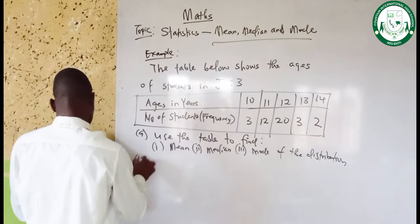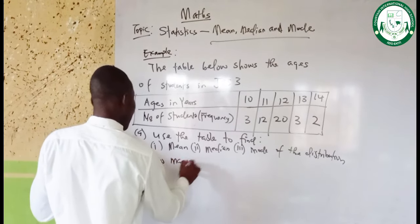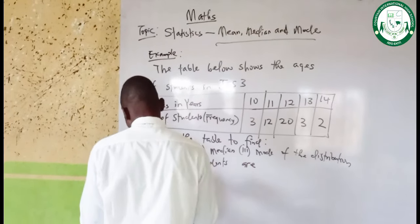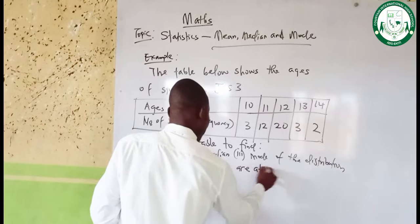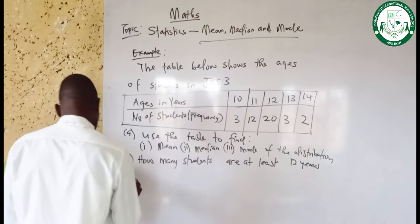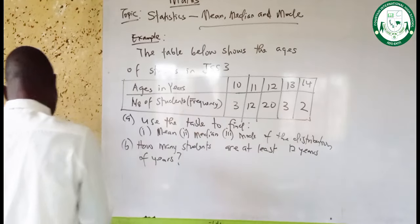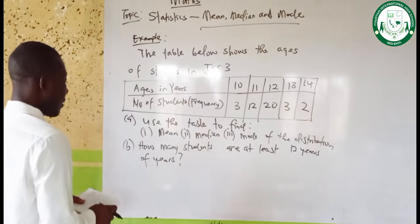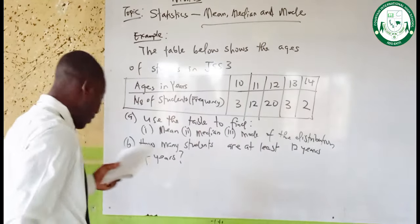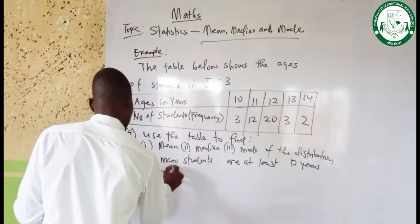That's for question 8 and question 10. Also, how many students are at least 12 years of age? How many students are at least 12 years? Let's note that down — at least 12 years of age.